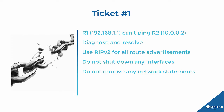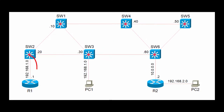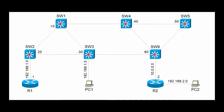Let's look at the Layer 3 topology diagram. R1 has an IP of 192.168.1.1, and according to the ticket, it cannot ping R2's 10.0.0.2 address. There's no indication of how routing is configured, but the ticket says use RIPv2 for all route advertisements. R1 and R2 are on separate subnets, so some IPv4 routing has to take place.